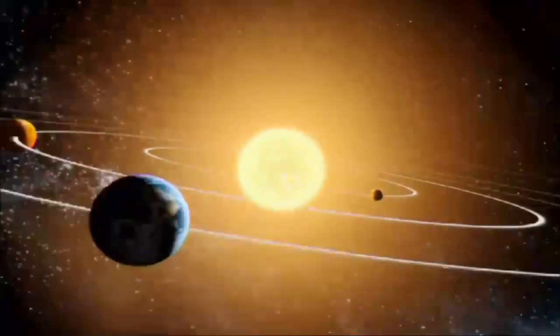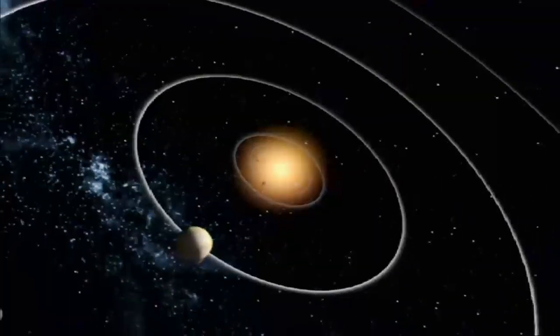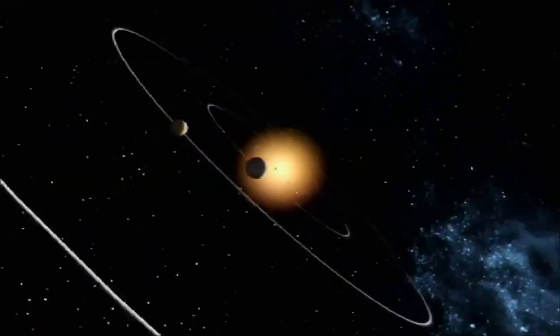We can't predict exactly where the sun will go in its orbit around the Milky Way. There's all kinds of things it could interact with. But here we have the history of one star. We know this is the path it took. And that will help us model how the galaxy works and how all the stars move around the middle of the galaxy.